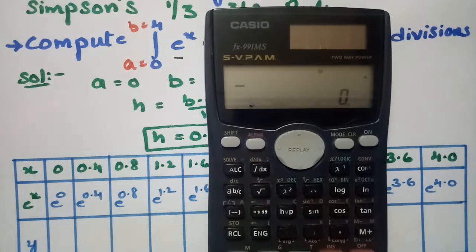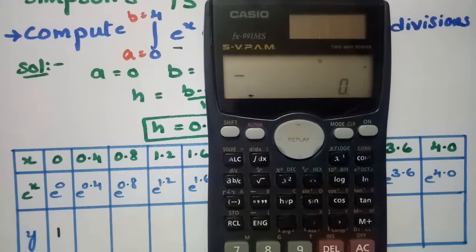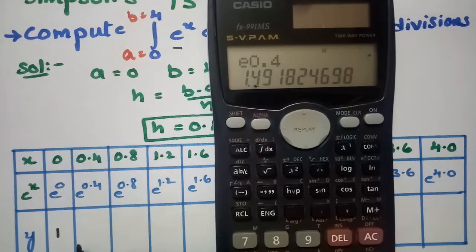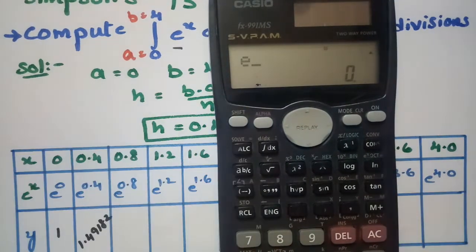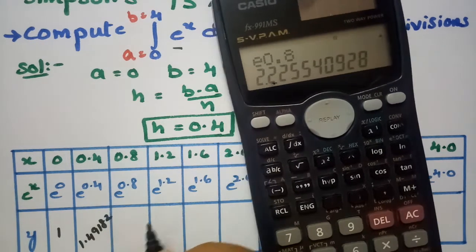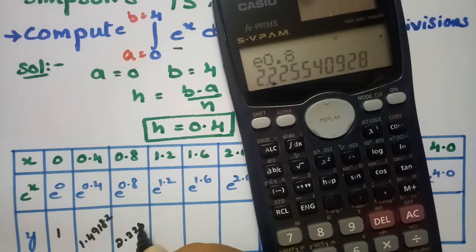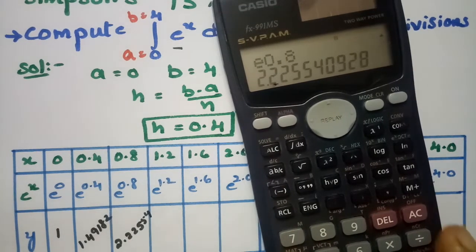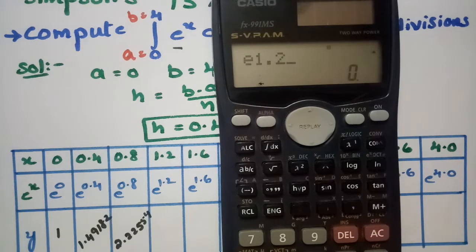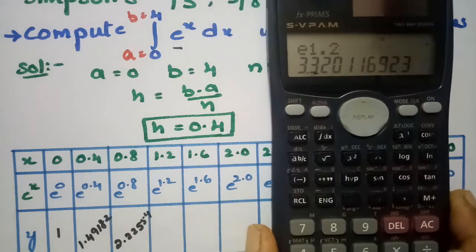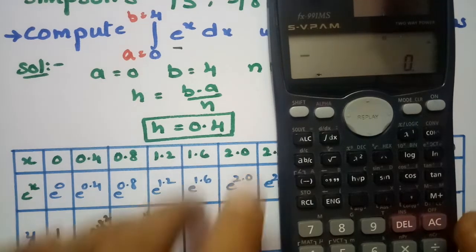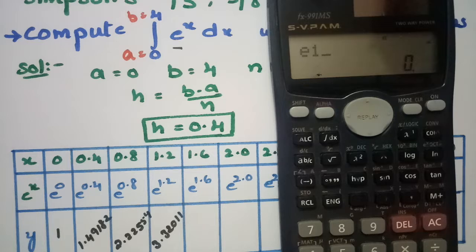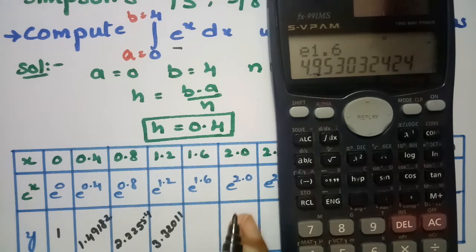We will be getting the values of y. Anything to the power of 0 is 1. For x=0.4, the value is 1.49182. For x=0.8, the value is 2.22554. For x=1.2, the value is 3.32011.